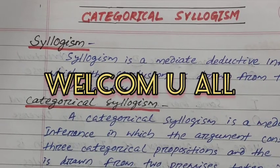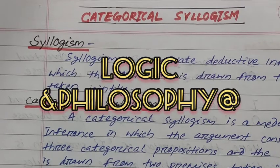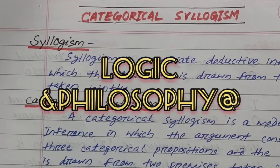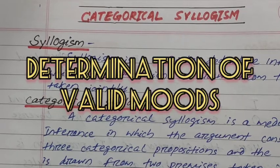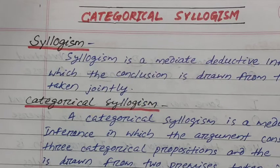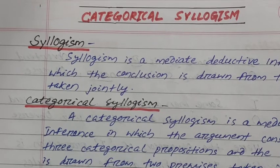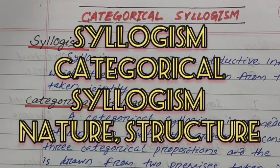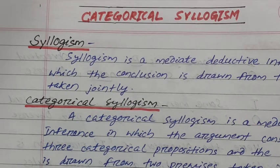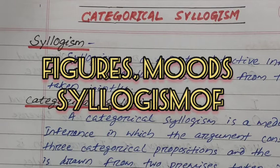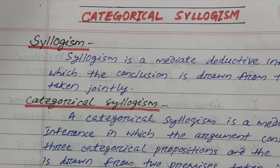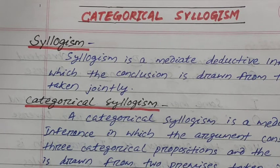Hello students, welcome to my YouTube channel Logic and Philosophy. Today I am before you with a new topic: determination of valid moods of syllogism. In the last session I have already discussed categorical syllogism — its nature, characteristics, structure, figures, and modes. You can watch the previous class from the link in the description box.